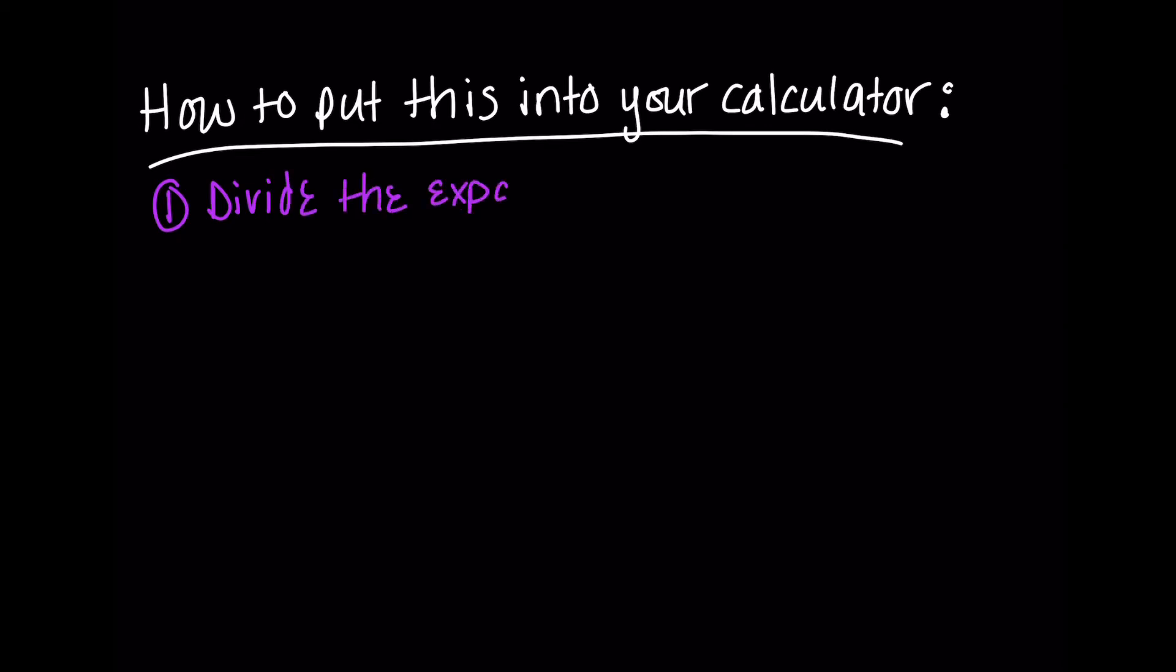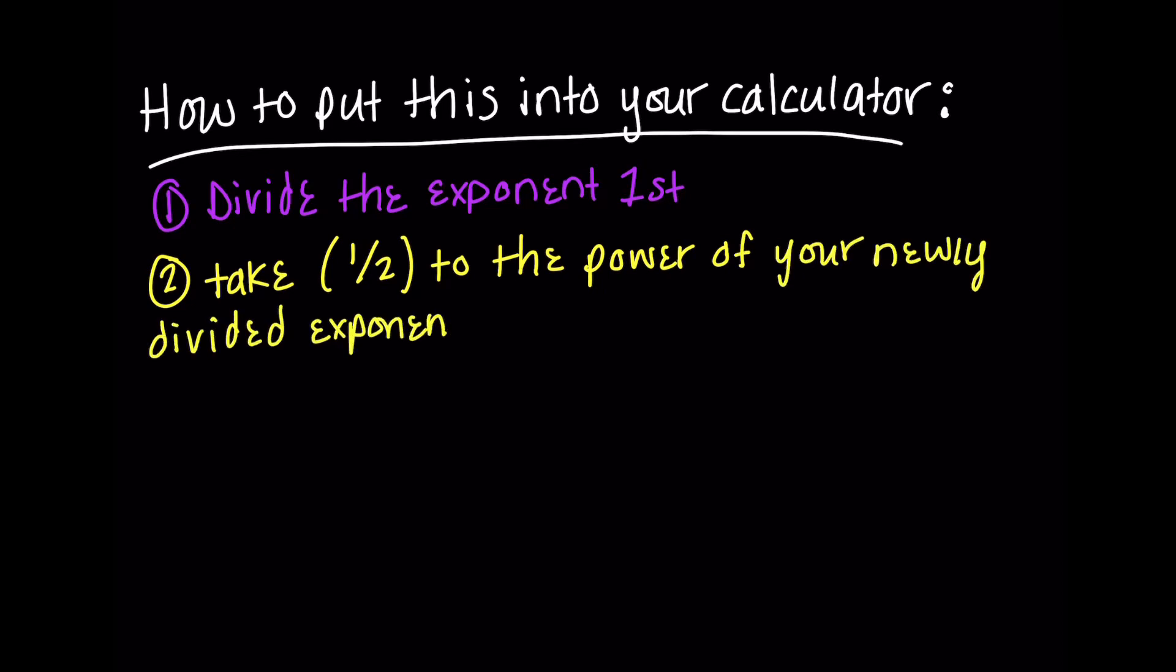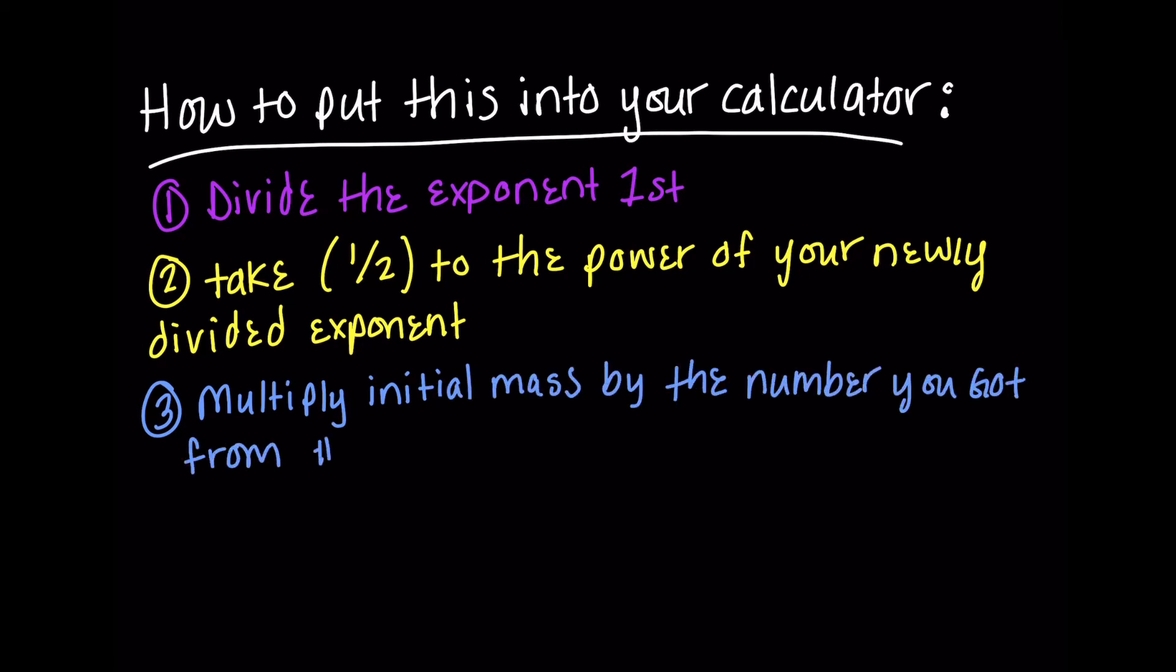So how do we put this into our calculator? The first thing we're going to do is we're going to divide the exponent. Then we're going to take the one-half to the power of that exponent that you just divided. Then we're going to multiply the initial mass by the number that you just found in number two.